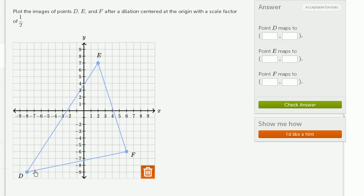For example, let's think about point D first. Point D is at negative 8. So if we have a scale factor of 1/2, point D will map to negative 4 on the x direction. On the y direction, D is at negative 9, so this is going to be at negative 4.5, half of that. That's where point D is going to be, the image of point D after the scaling.